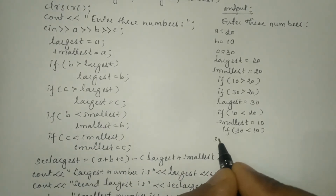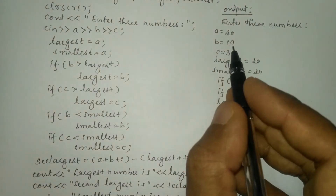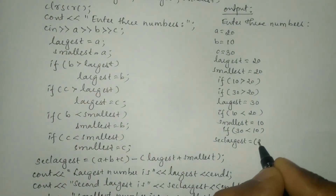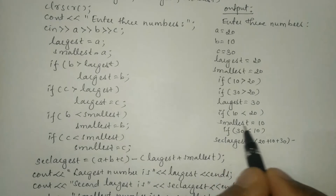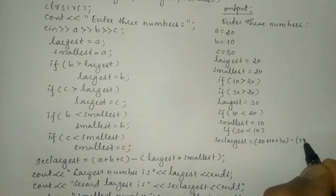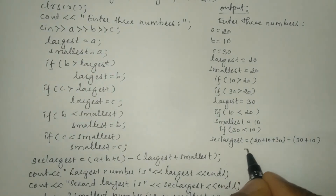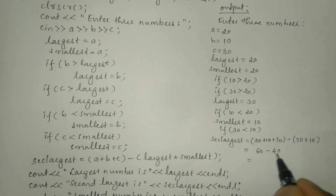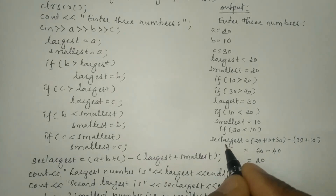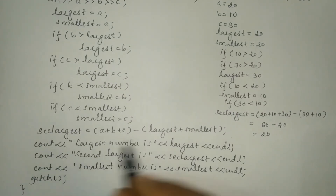Now for the second largest: sec_largest = a + b + c − (largest + smallest) = 20 + 10 + 30 − (30 + 10) = 60 − 40 = 20. So 20 is assigned to sec_largest. Now we are going to print all three values using the cout statements.